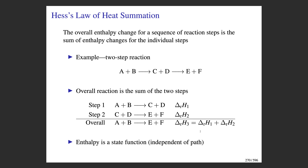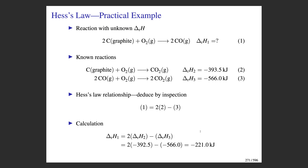Let's illustrate Hess's law using a more practical example. Suppose you're interested in the partial combustion of carbon graphite to carbon monoxide, and you want to know the enthalpy of reaction. The trouble is that when you combust graphite, you won't get only carbon monoxide — you'll always get some carbon dioxide produced, making it difficult to study this reaction experimentally, at least directly. However, if you do a complete combustion of graphite, you'll produce exclusively CO2, and the delta H value for that reaction is known.